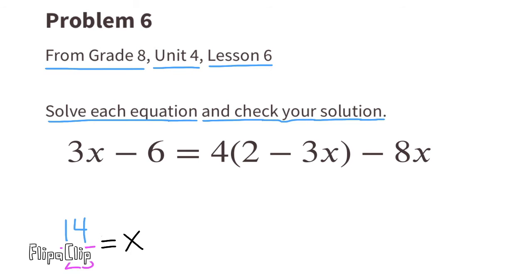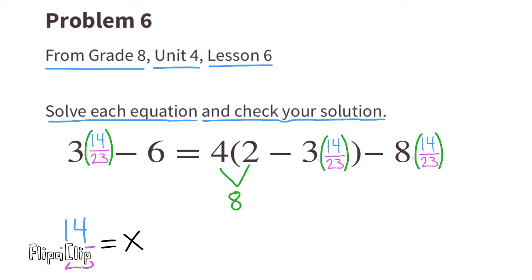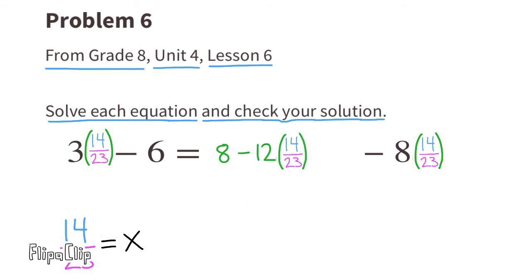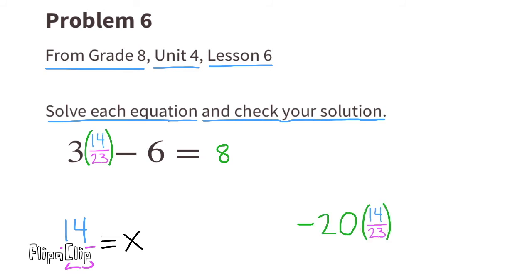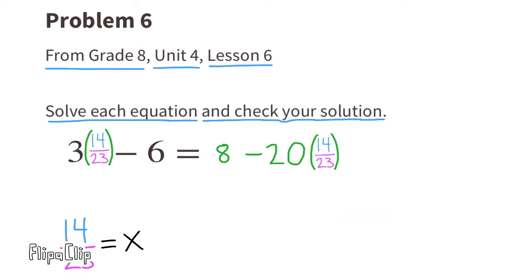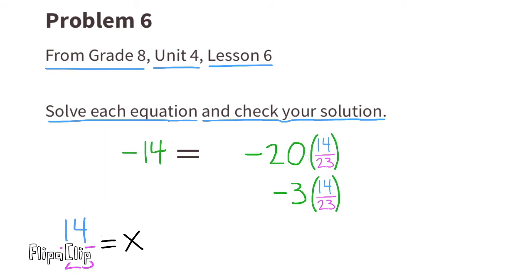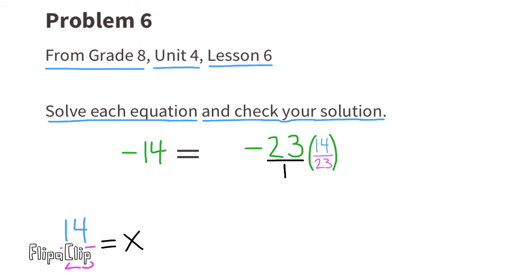Check the solution by substituting all X's with 14 twenty-thirds. Use the distributive property: 4 times 2 is 8, and 4 times negative 3 times 14 twenty-thirds. Combining negative 12 times 14 twenty-thirds and negative 8 times 14 twenty-thirds gives negative 20 times 14 twenty-thirds. After subtracting 8 and 3 times 14 twenty-thirds from both sides, negative 23 times 14 twenty-thirds simplifies to negative 14. The equation reads negative 14 equals negative 14, confirming the solution.